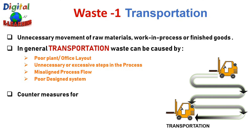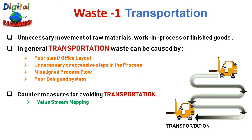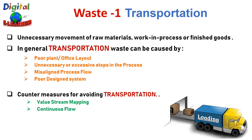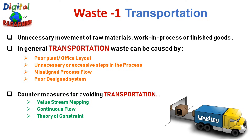Some countermeasures to avoid transportation waste include: value stream mapping, where you design a linear and sequential flow of raw material to finished goods, and eliminate all process steps that do not add value. Continuous flow — make sure work in process is not placed into inventory and there is a continuous flow of work happening. Theory of constraints — avoid continuously changing job priorities.